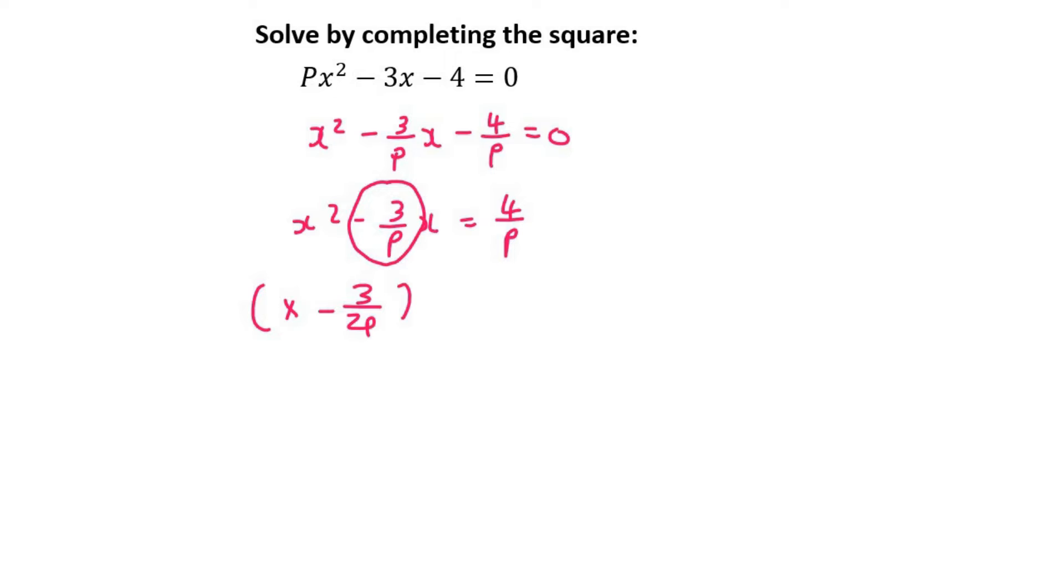So that's going to be 3 over 2p squared, and then that's going to be equal to 4 over p plus, in a bracket, then I put this number again, so it's minus 3 over 2p.